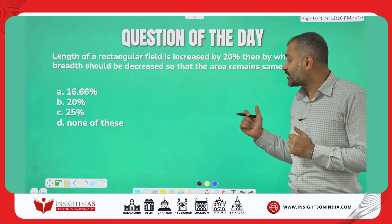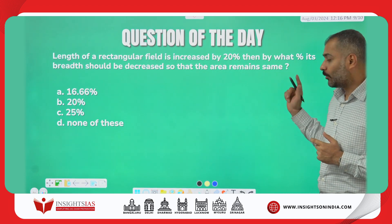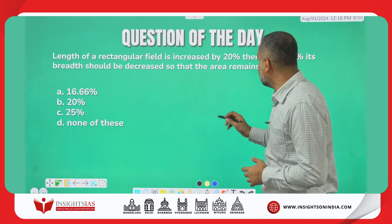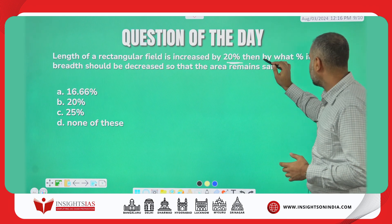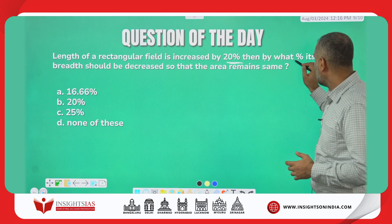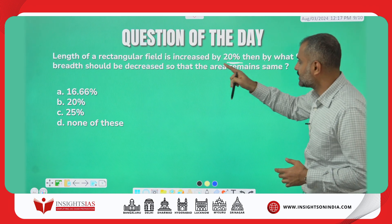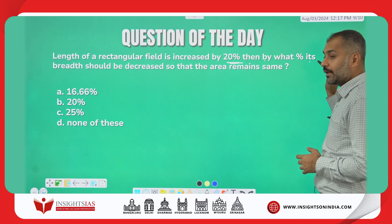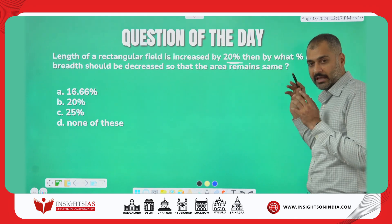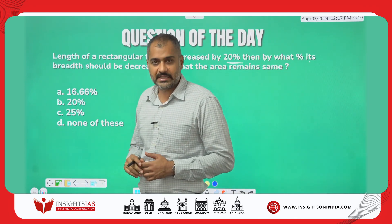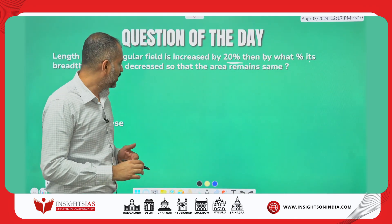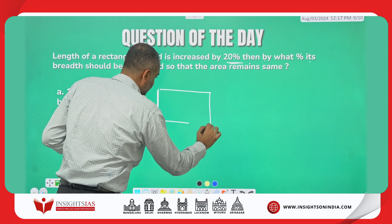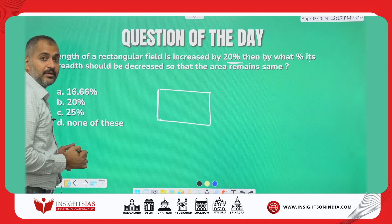Now, this is today's question. The question says: the length of a rectangular field is increased by 20 percent. By what percent should its breadth be decreased so that the area remains the same? This is a very common question in most exams, and the concept can be asked in many ways.